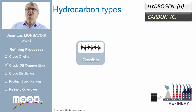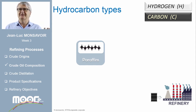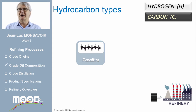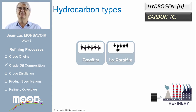Now we'll focus on the hydrocarbon types typically found in crude. In crude oil, you can find naturally four types of hydrocarbons. First, we have paraffins: linear hydrocarbons made up of carbon and hydrogen atoms. Long linear paraffins are also called waxes. Second, isoparaffins, which are non-linear paraffins with one or multiple small groups of carbon and hydrogen attached to them.